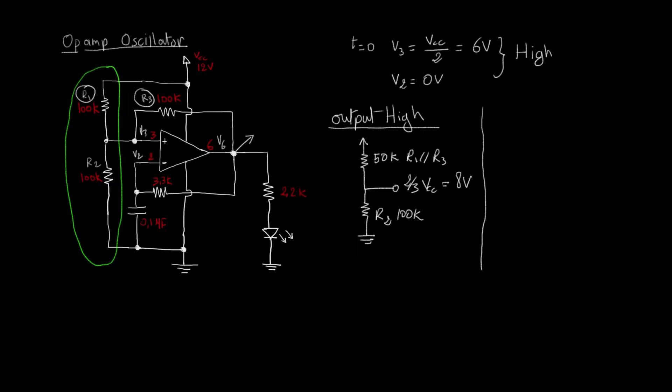So now we have V3 equal to 8 volts when our comparator turns its output to high. At the same time the capacitor here starts to charge up, and the voltage across the capacitor starts to rise until it reaches 8 volts. When it reaches 8 volts, the output will turn low.